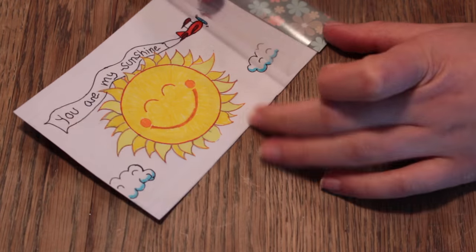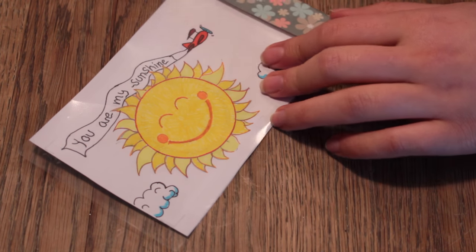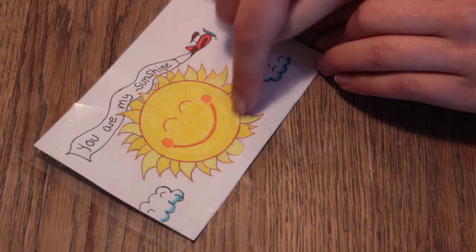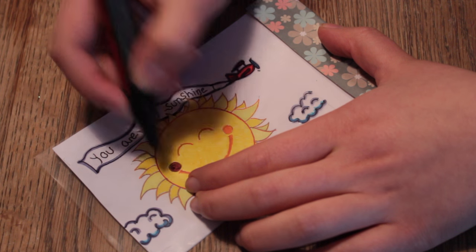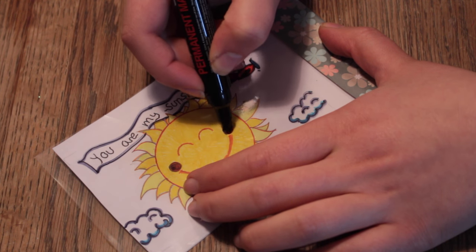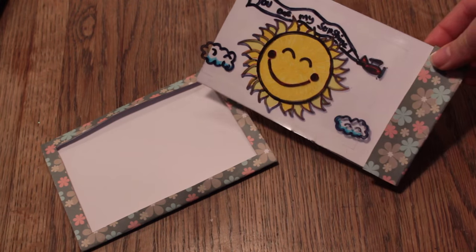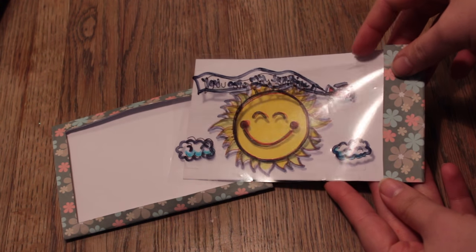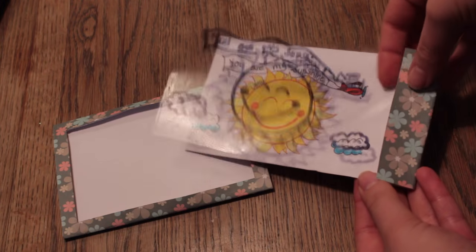Then fold the transparent sliding piece over the drawing and resketch everything or some smaller pieces with a black marker. Now it's time to reassemble the card.